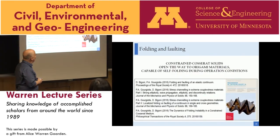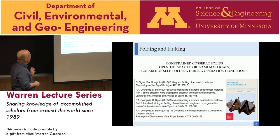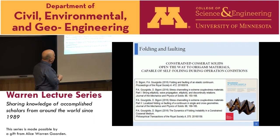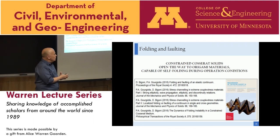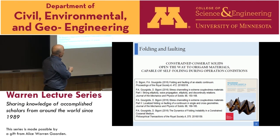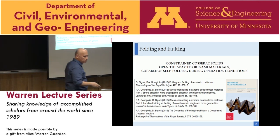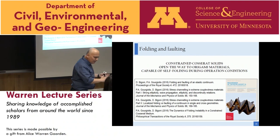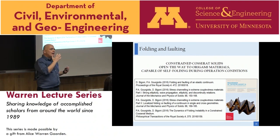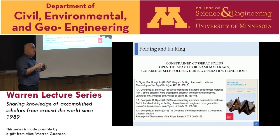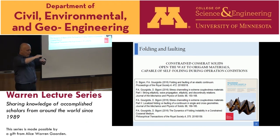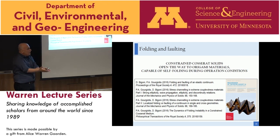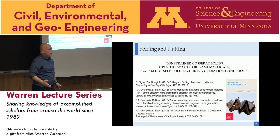This concludes the first part of my talk. The key idea is that the way to get folding in solids is to use materials with an internal length. A constrained Cosserat material can be physically imagined as many plates superimposed on each other — loading such a stack could produce folding.